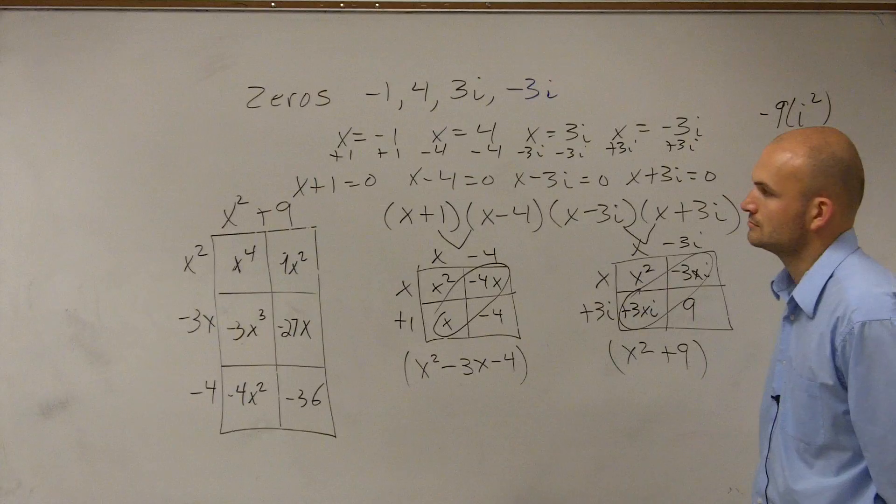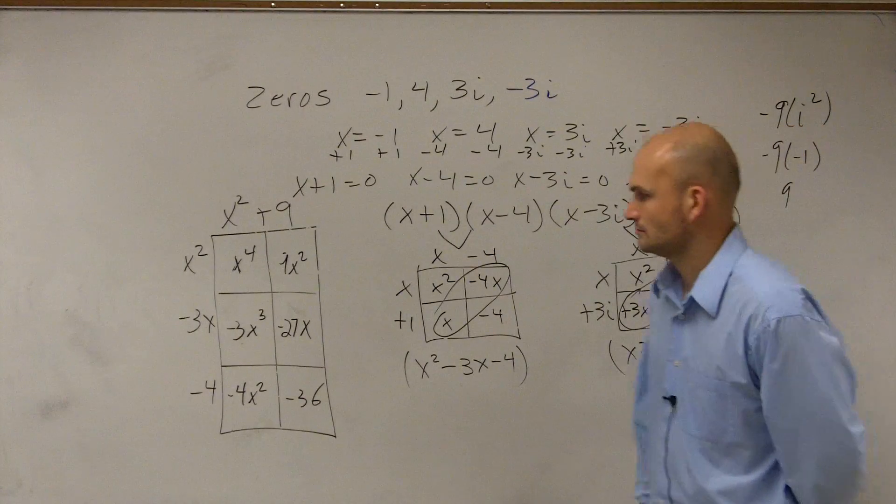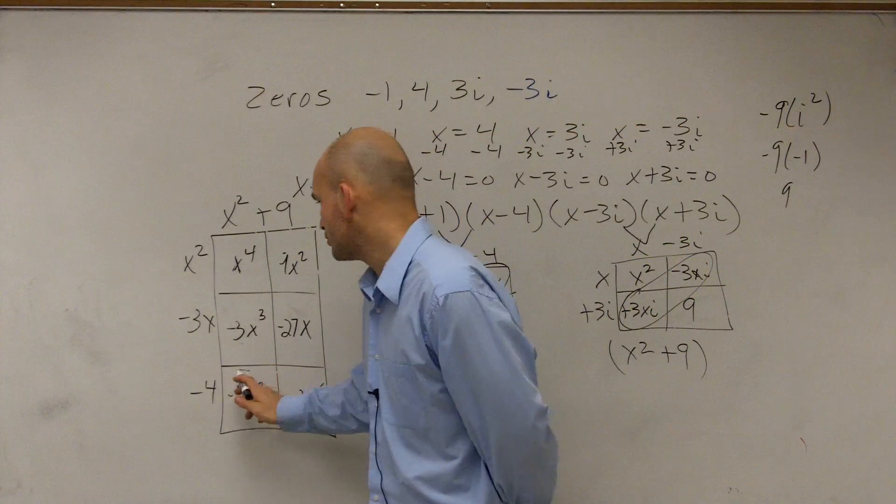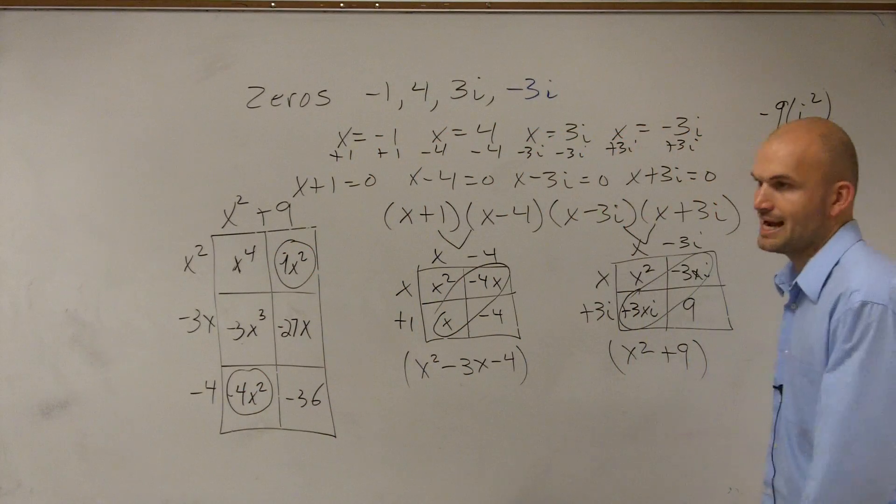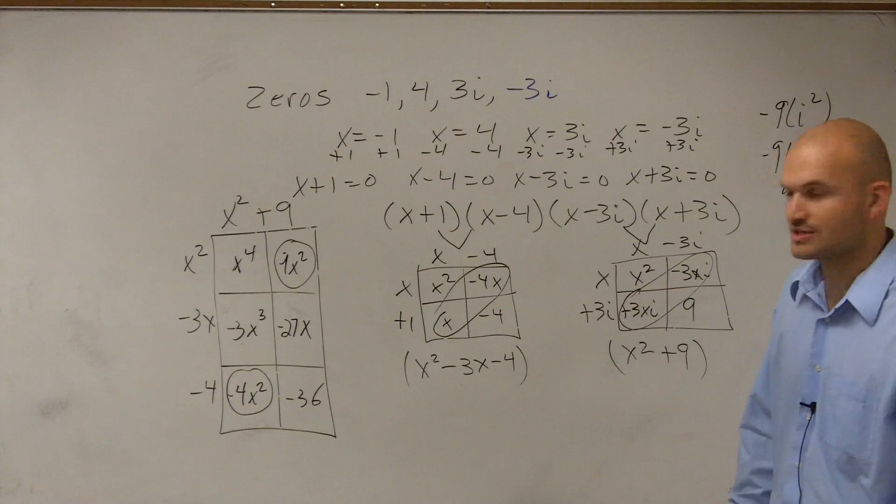So it's x to the 4th minus 3x squared. So the only terms I can combine are negative 4x squared and a 9x squared, which is going to give me a 5x squared, right?